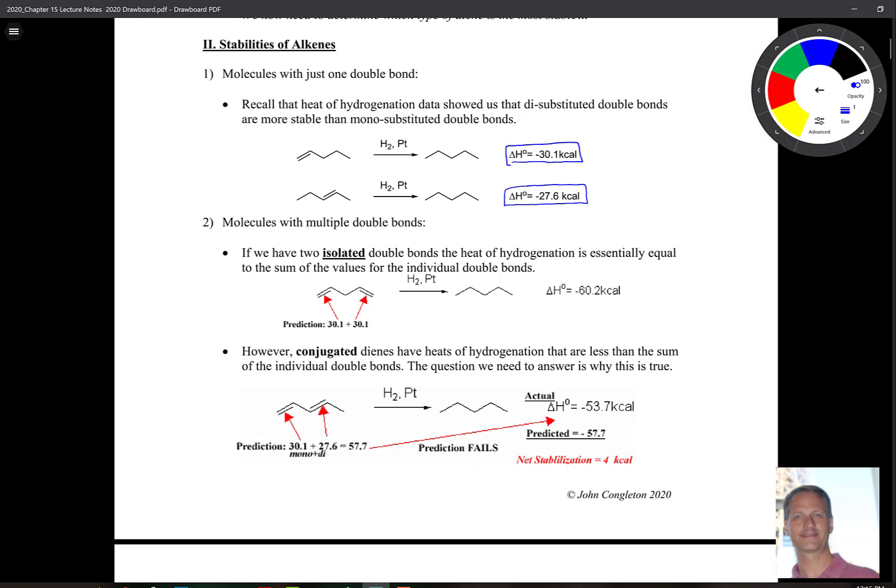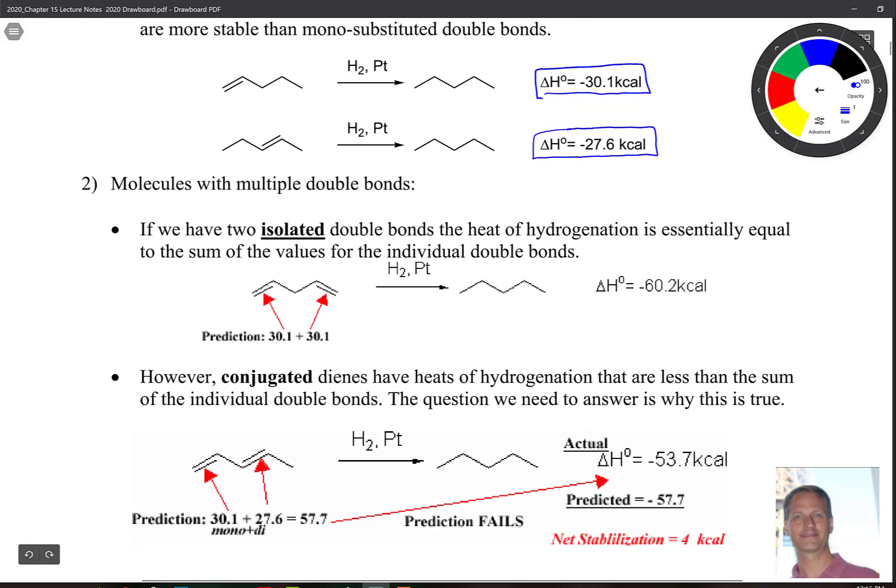Now, what about molecules with multiple double bonds? So we just looked at molecules with only one. Well, let's put them together. So if we have a molecule like this, where we have a double bond and another double bond, and now they're separated here. So these are isolated, remember? And this double bond is monosubstituted. And this is monosubstituted.